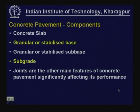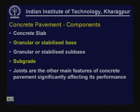As we have just seen, these are the components that a concrete pavement will have: concrete slab, granular or stabilized base — this base can be either granular or stabilized, it can be dry lean concrete base — it can also have a granular sub-base which can be a stabilized sub-base as well, and it will of course have a subgrade.